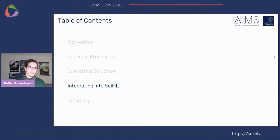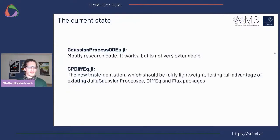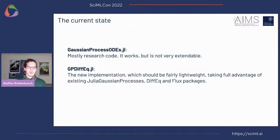How does this integrate into SciML? Ideally it would be possible to swap neural networks and GPs when identifying a system, to see which works better for a given problem. Currently there are two packages reflecting what I've shown. The first is GaussianProcessODEs — unfortunately mostly research code, written about a year ago. It works and has nice bits, but is not very extendable. More recently I've started to build GPDiffEq, which I hope can be a lightweight package to connect the existing tools from the Julia Gaussian Processes organization with the DiffEq and Flux packages, so that as all parts get more powerful, the aggregate also improves.